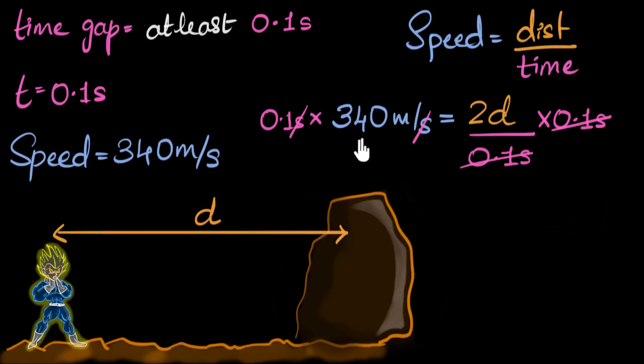So what do we have? Well, on the left-hand side, we have 340 into 0.1. 340 into 0.1 is 34. So that will be 34. And there's a meter over here. And on the right-hand side, we have 2d.